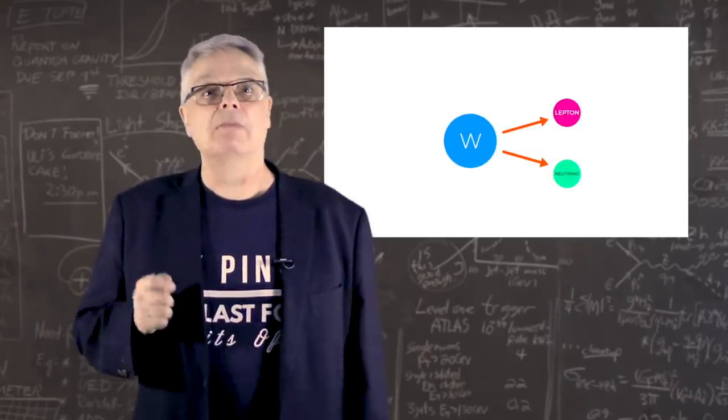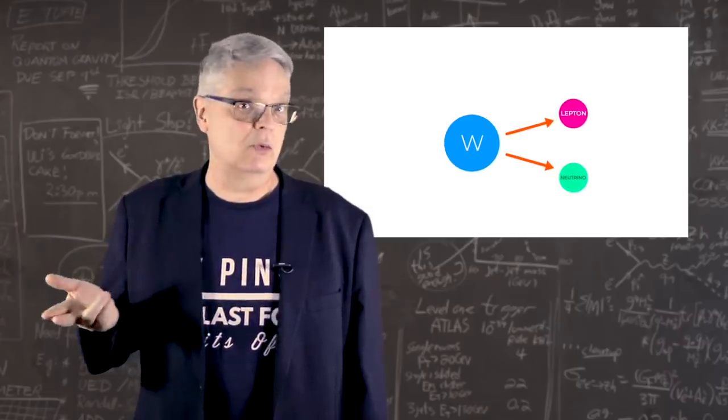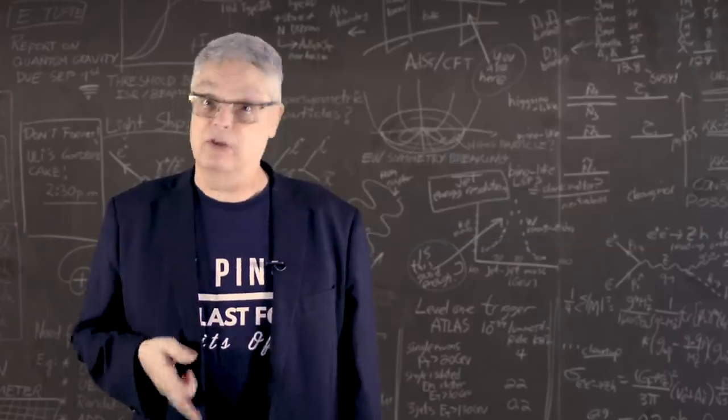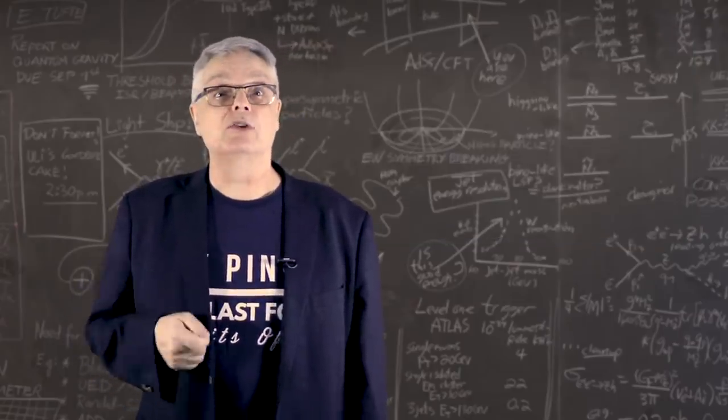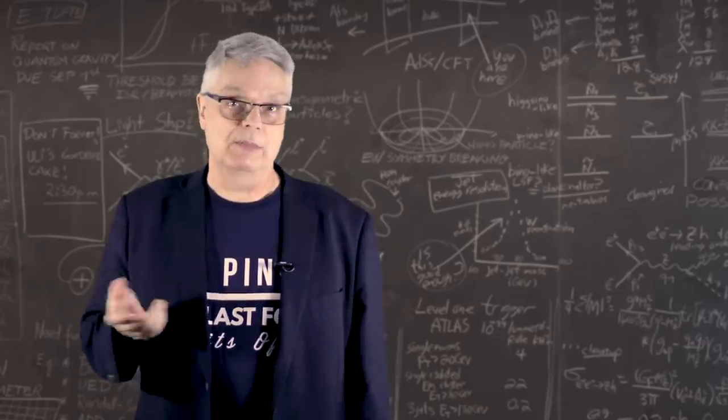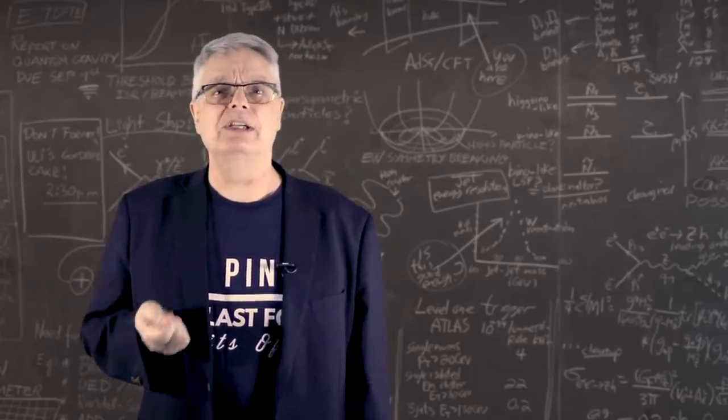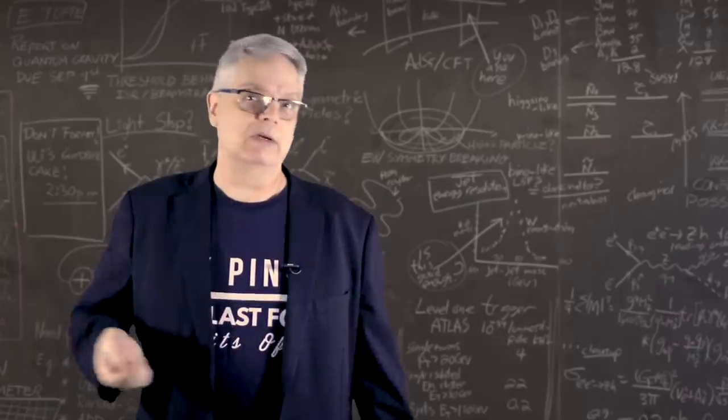On the other hand, modern experiments can measure the energy and momentum of electrons and muons very well, so that's attractive. However, on the third hand, neutrinos pass through the detector without interacting, so you have no direct information about the neutrino. That's a problem, but you can estimate the energy and momentum of the neutrino by measuring everything else.